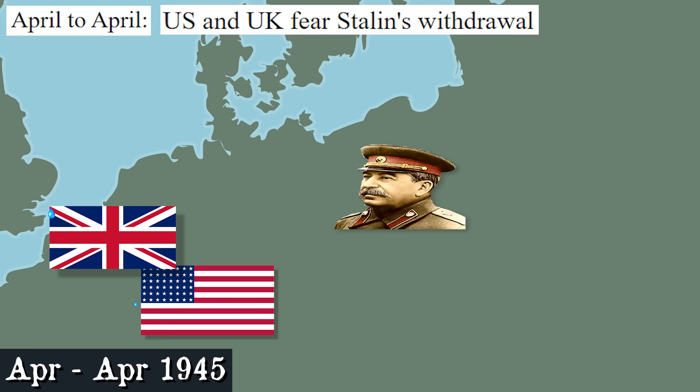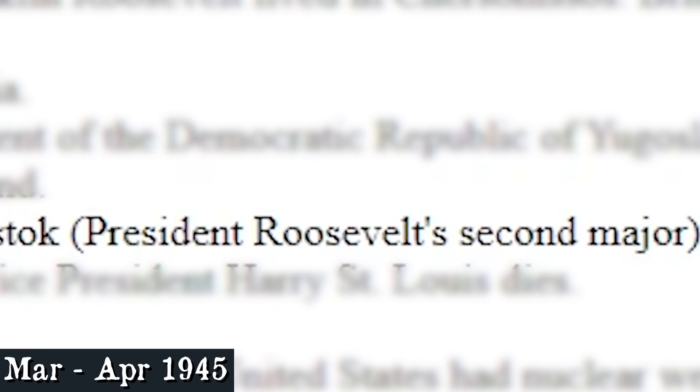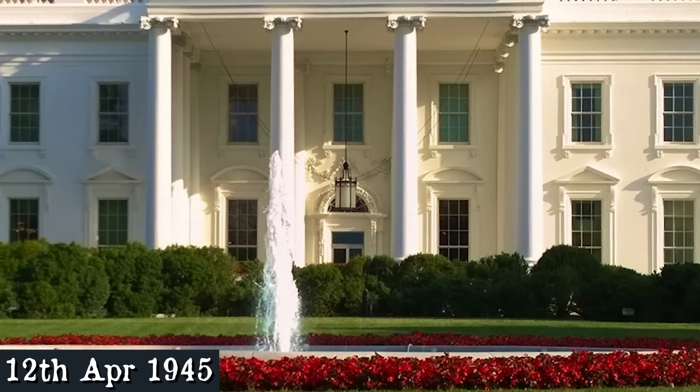April to April 1945: US and UK fear Stalin's withdrawal and invasion of Poland. March to April 1945: British pound. Russian officials involved in Operation Vostok. President Roosevelt's second major denied the allegations. Please stop moving. And then April 12th, 1945, President Roosevelt dies. Vice President Harry St. Louis dies.